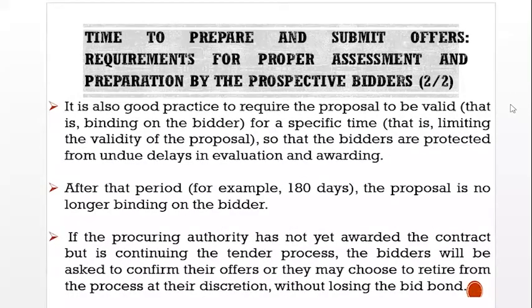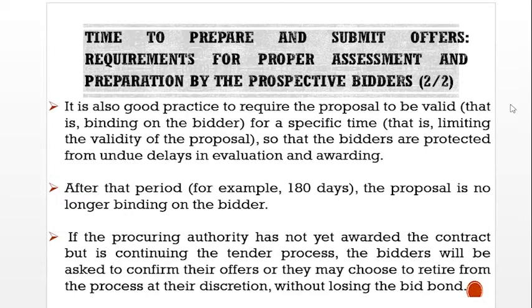It is also good practice to require the proposal to be valid — that is, binding on the bidder — for a specific time, limiting the validity of the proposal so that bidders are protected from undue delays in evaluation and awarding. After that period — for example, 180 days — the proposal is no longer binding on the bidder. If the procuring authority has not yet awarded a contract but is continuing the tender process, bidders will be asked to confirm their offers, or they may choose to retire from the process at their discretion without losing the bid bond.